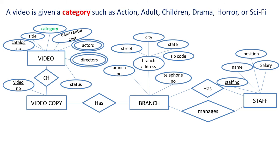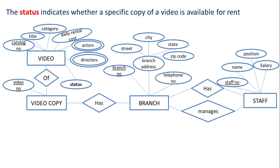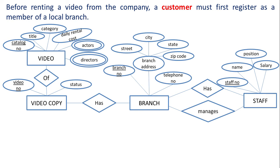A video is given a category such as action, adult, children, drama, horror, or sci-fi. We have already added category as an attribute of entity video — these values are all possible values of the attribute category. The status indicates whether a specific copy of a video is available for rent, so status is an attribute of copy instead of video.